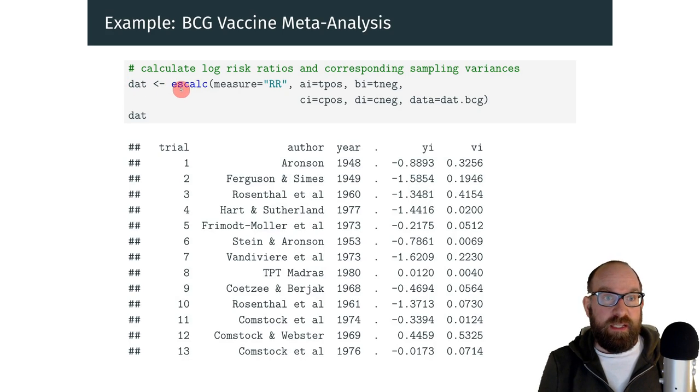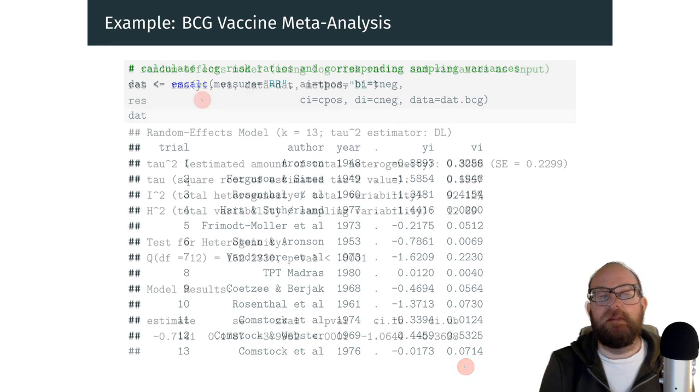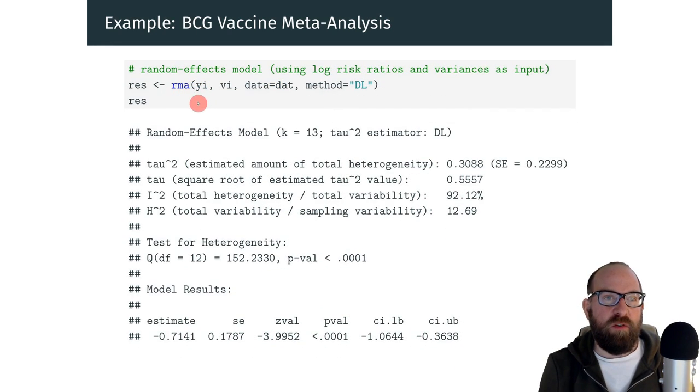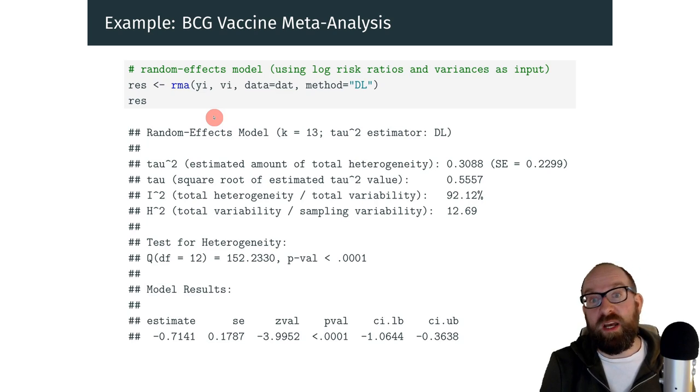We can then use the escalc function from the metaphor package to compute the effect sizes. In this case, these risk ratios, or more specifically, we will compute log risk ratios because this is what we need for the analysis. So here we have now this variable with these log risk ratios and the corresponding sampling variances.